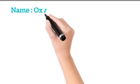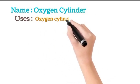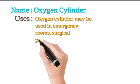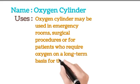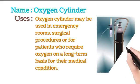Name: Oxygen cylinder. Uses: Oxygen cylinders may be used in emergency rooms. Surgical procedures use them for patients who require oxygen on a long-term basis for their medical condition.